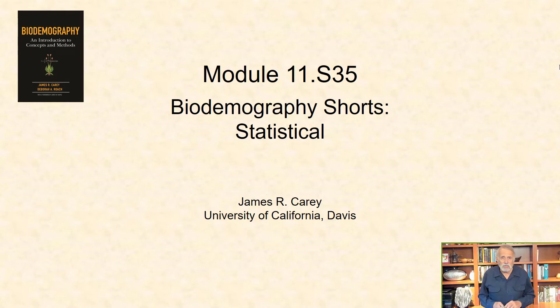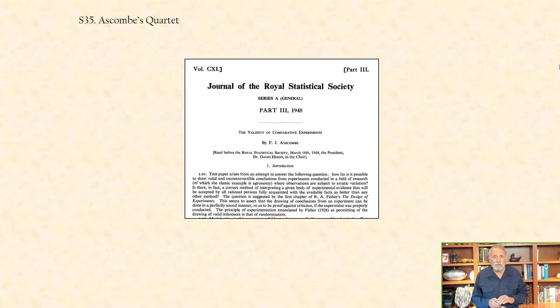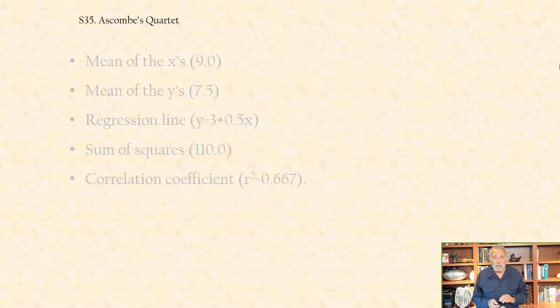In this biodemographic short, I consider what is referred to as Anscombe's Quartet. In a paper published in 1993, Anscombe showed four fictitious datasets, each containing 11 x-y pairs with the same statistical output.